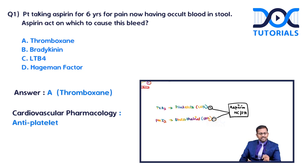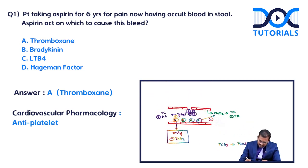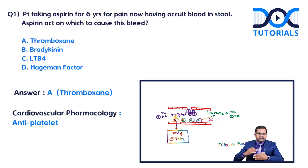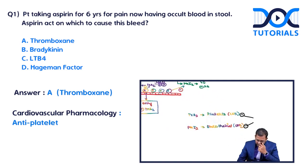There is an important difference between vascular endothelial cells and platelets. Endothelial cells have a nucleus, which means even if aspirin non-competitively and irreversibly inhibits cyclooxygenase, endothelial cells have the capacity to re-synthesize cyclooxygenase and re-synthesize PGI2. But that is not seen with platelets, because platelets do not contain a nucleus.